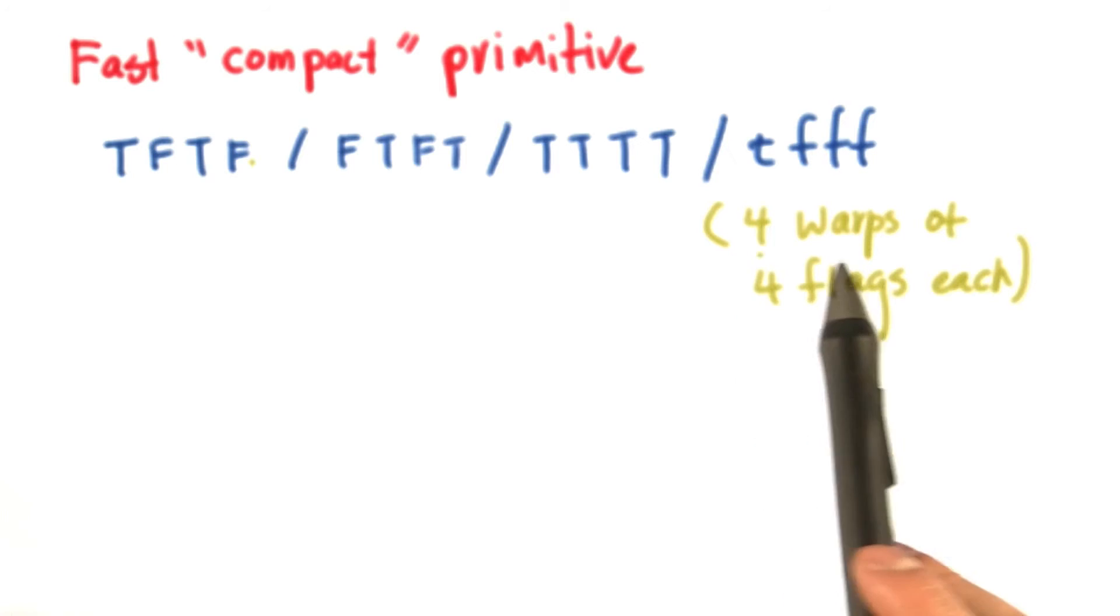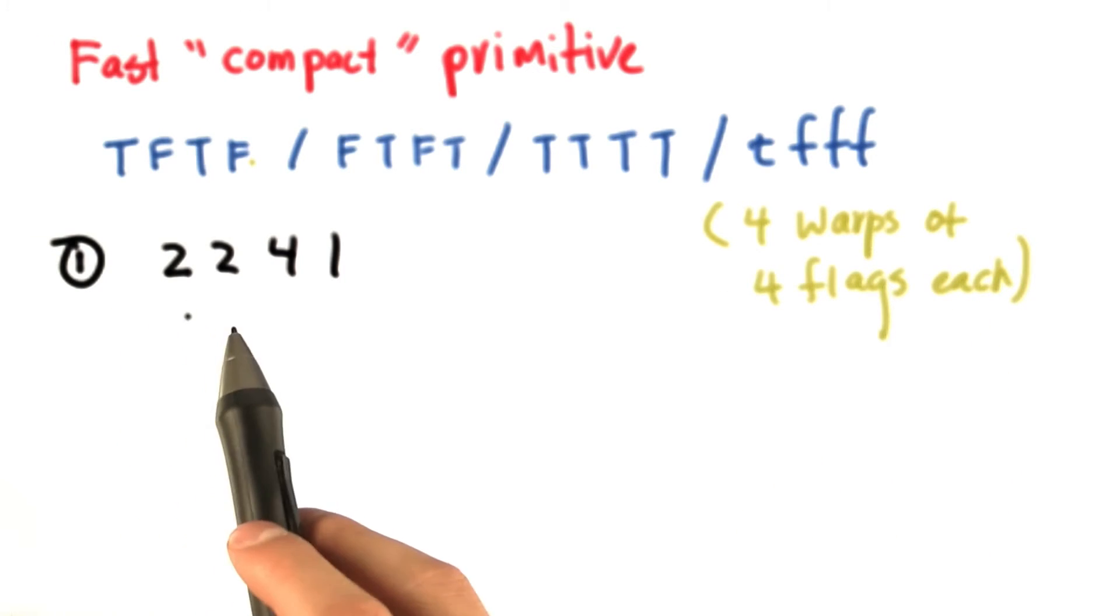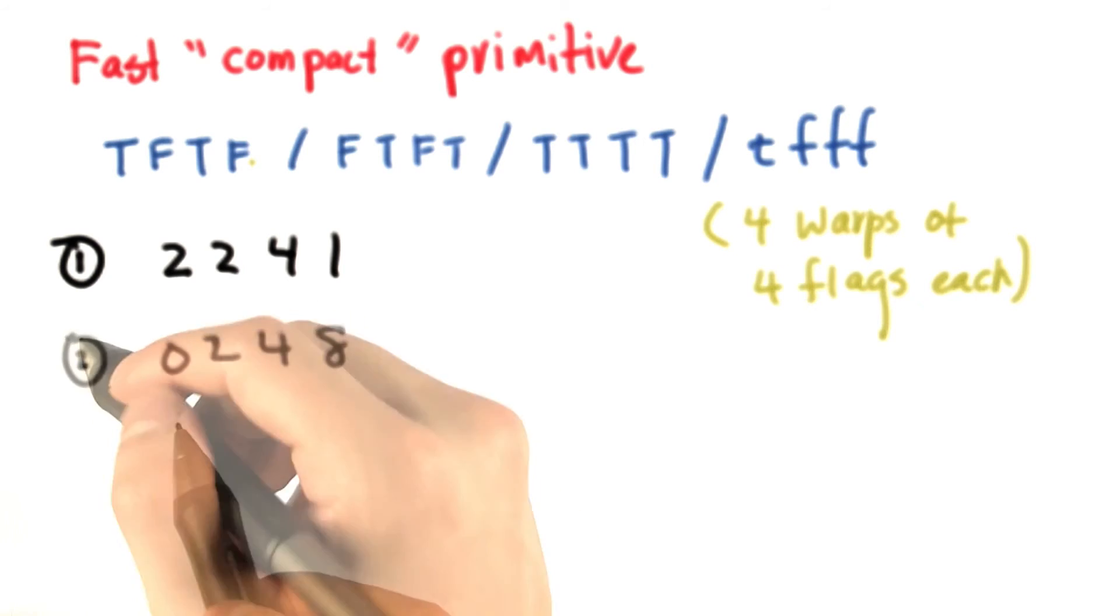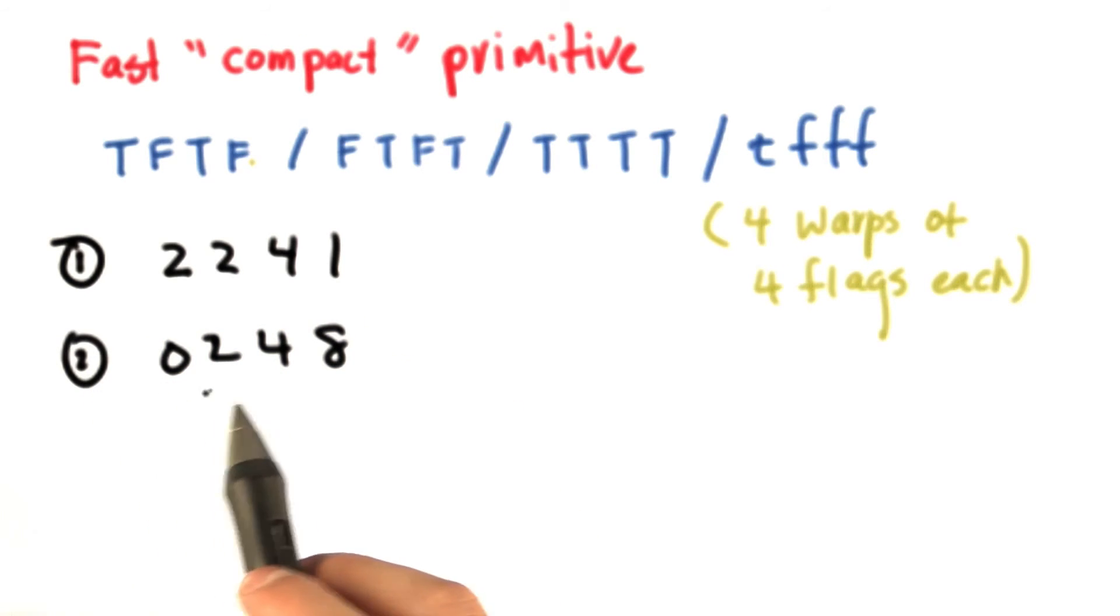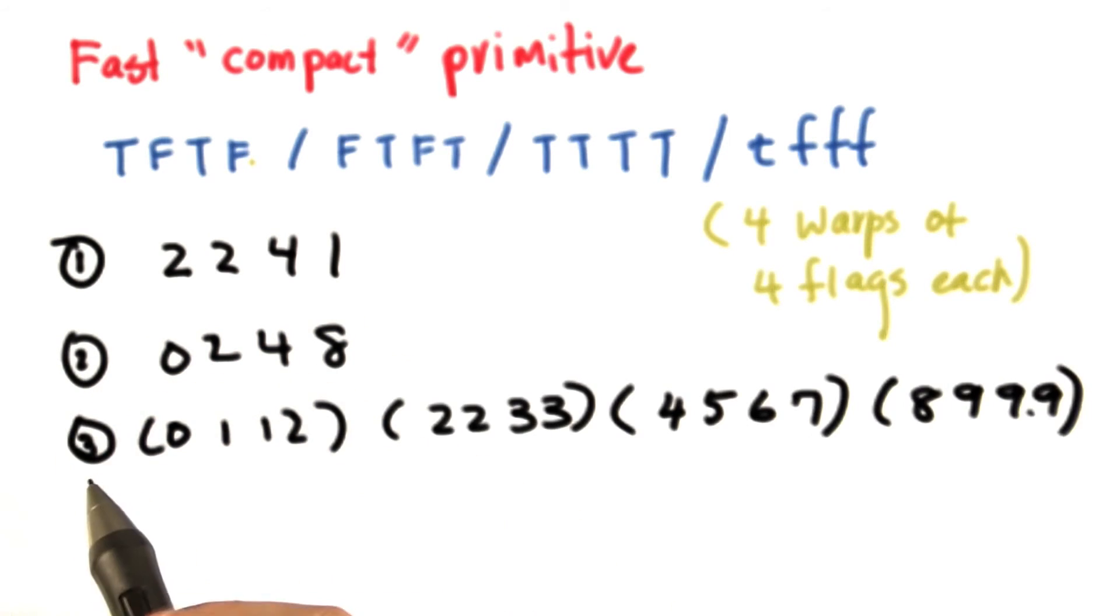And here's our input of four warps of four flags each. Step one outputs 2241, step two outputs 0248, step three outputs 0112, 2233, 4567, 8999.